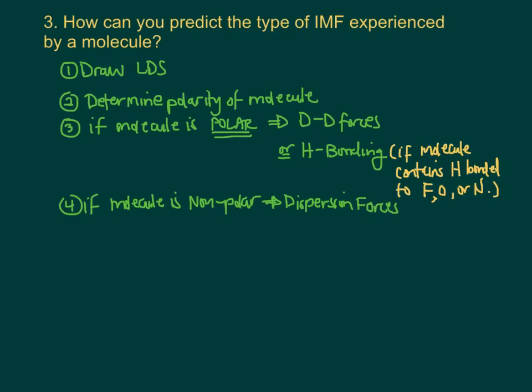Let's discuss how you can determine or predict the type of intermolecular force that a particular molecule would experience. To do this, you first have to draw the Lewis dot structure — you can't get around that. From there, use the Lewis dot structure and the shape of the molecule to determine how polar it is.